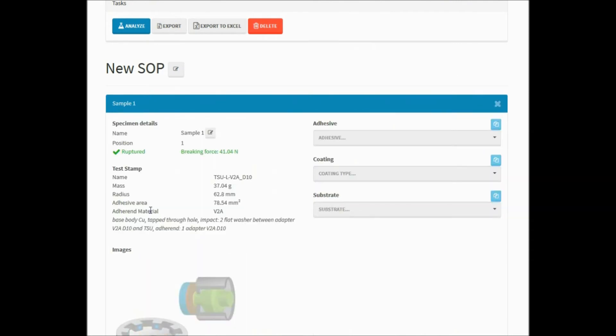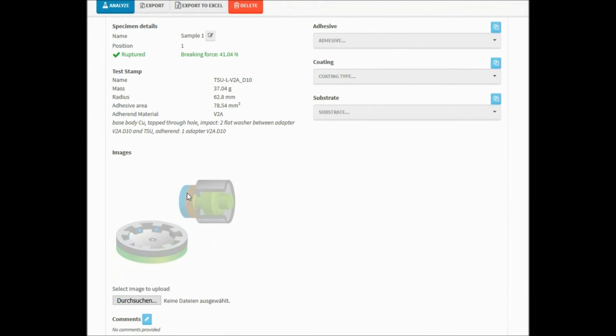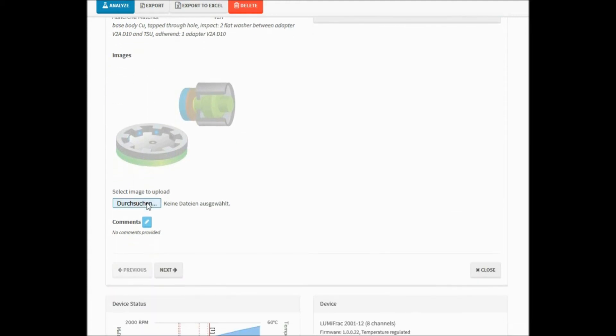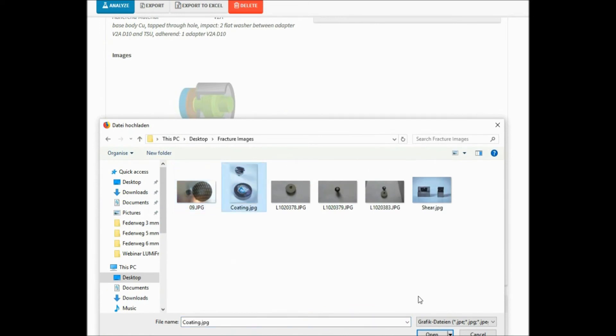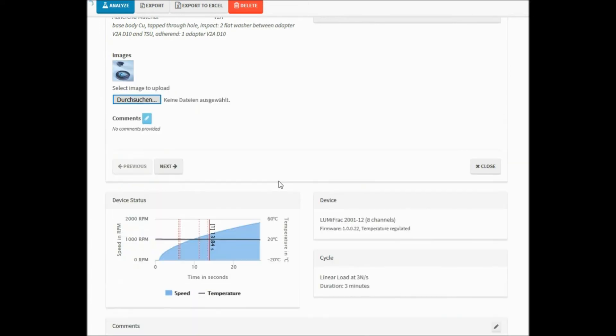Here we click in the detailed view for our sample one. Again, we have options for every single sample, like Excel export and a re-watch of the recorded analyses. Another interesting feature is the image upload, where you can make a picture of your ruptured specimen and assign it to the specific sample.